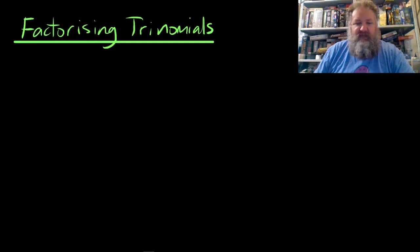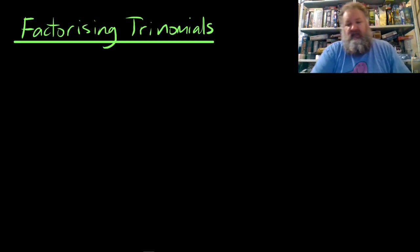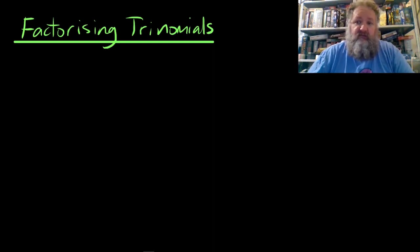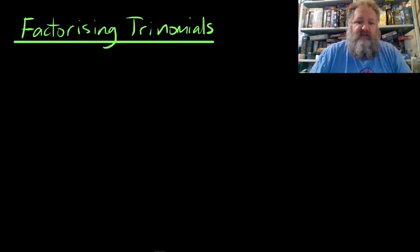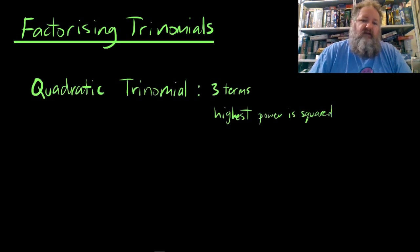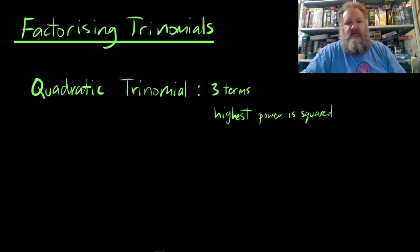We can finally get to factorizing trinomials. We've looked at expanding binomials, which gave us trinomials — expressions with three terms. The particular type we'll be looking at is called a quadratic trinomial, which means the highest power is two, so you'll have something squared as the highest power.